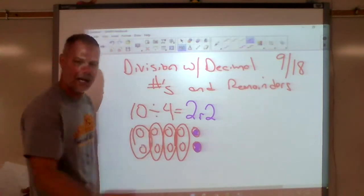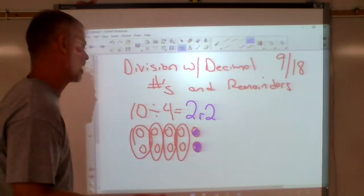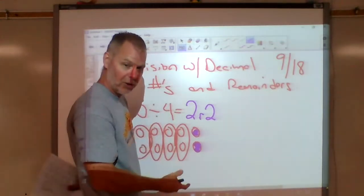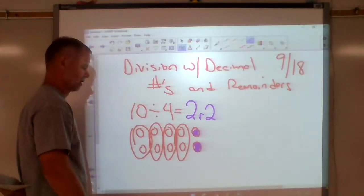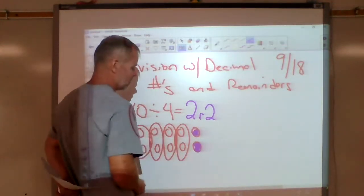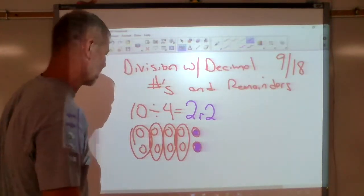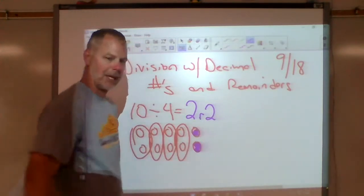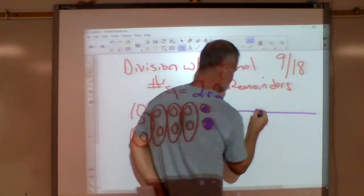Now, this makes sense in some applications, but not all. Say we had 10 dogs and four kennels — how many dogs per kennel? Well, you could put two dogs in each kennel and you'd have two left over. Sometimes that doesn't make sense, and sometimes we need something a little more precise where the remainder doesn't work.